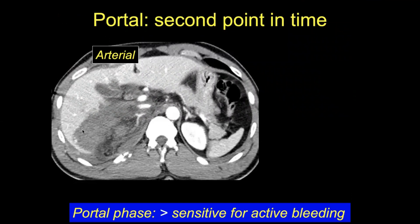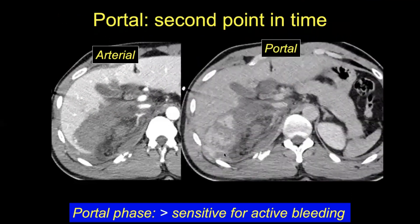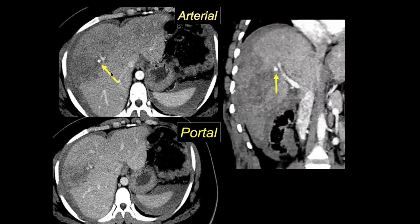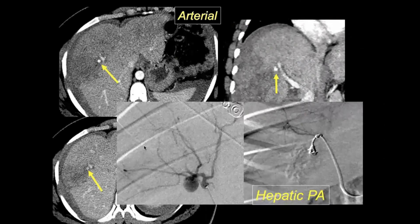In this example, there is an extensive liver laceration and the portal phase demonstrates significant active bleed. Note how there were only a couple of small foci of active extravasation on the early arterial phase; the portal phase provides a second point in time to assess the rate of bleeding. In this case, the arterial and portal phase demonstrate a small pseudoaneurysm that does not change in size and morphology between the two phases. The patient was treated with embolization.